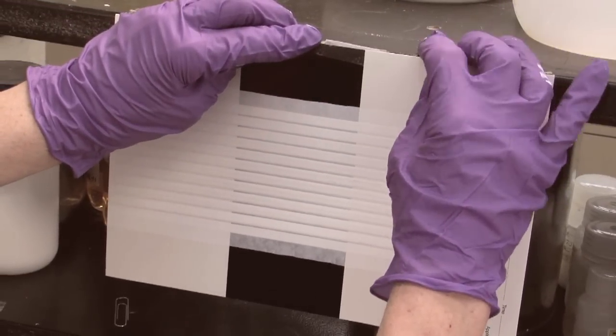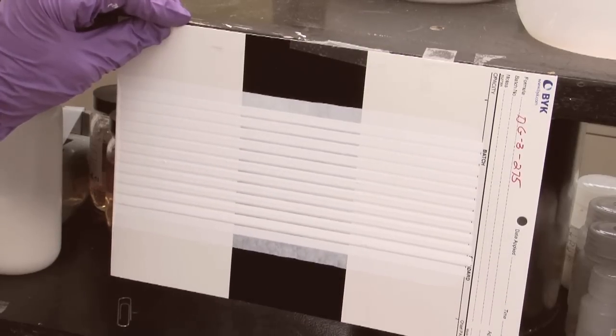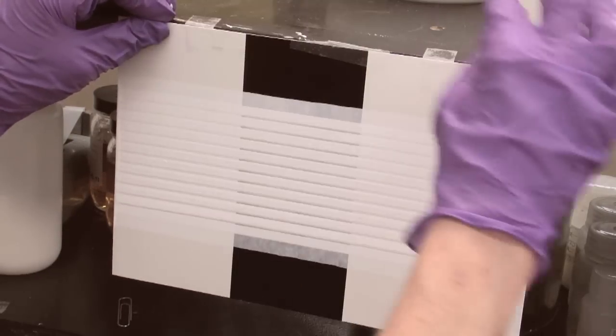Gravity pulls at the paint, causing it to sag. Results can usually be seen in one to two hours depending on the paint.